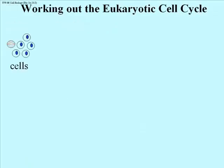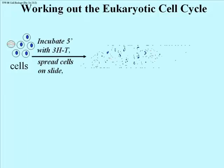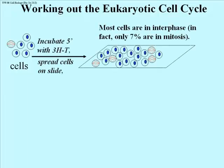Let's continue to work out the cell cycle experimentally. We have some cells in culture — some are in mitosis and others are not. If you take such cells from a non-synchronous culture and incubate them for a short time with a precursor to DNA — in this case tritiated thymidine — remember, thymine is part of the nucleotide incorporated into DNA exclusively. Tritiated thymidine is radioactive, so if taken up by cells, the DNA will become radioactive.